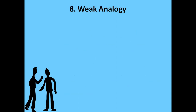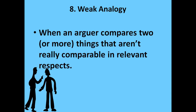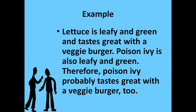The eighth fallacy is weak analogy. An analogy compares two different qualities or characteristics. Weak analogy appears when an arguer compares two or more things that aren't really comparable in relevant aspects. For example: 'Lettuce is leafy and green and tastes great with a veggie burger. Poison ivy is also leafy and green. Therefore, poison ivy probably tastes great with a veggie burger too.' The two things are not truly comparable, so the analogy is false and leads to a fallacy.